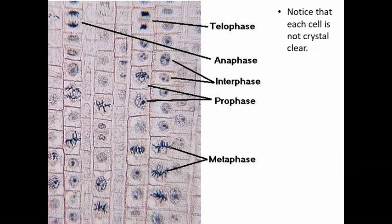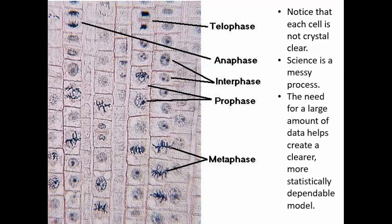You'll notice that in these pictures each cell is not crystal clear. It's not actually abundantly 100% clear for every cell. That's because science is a messy process. The need for large amounts of data helps us create a clearer, more statistically dependable model of what the cells are going through. So it takes a lot of research to reach conclusions. It isn't just done with one onion root tip.